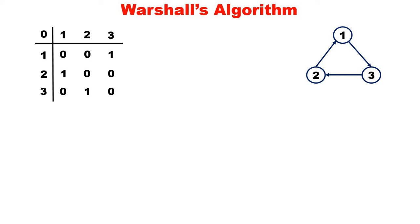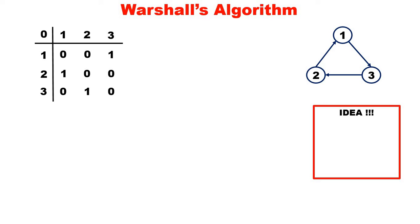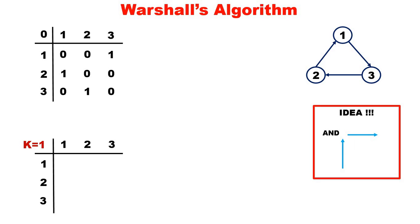From this adjacency matrix, we have to get the path matrix. We will consider the value of k as 1 first. Whatever 1s are there in the adjacency matrix, you have to retain them, because already there is a direct edge means it is 1. So we retain all existing 1s. Now we will compute 1 to 1 via 1: vertically 1 to 1, horizontally 1 to 1. The value of 1 to 1 in the adjacency matrix is 0, so 0 AND 0 is 0. You should do the AND operation.